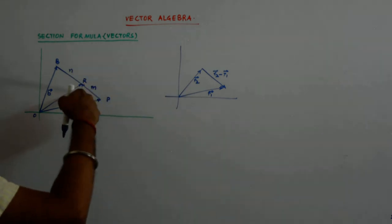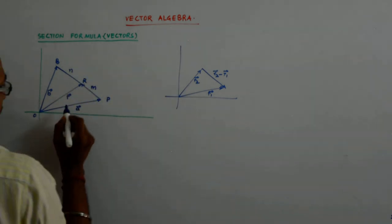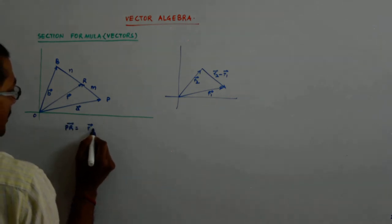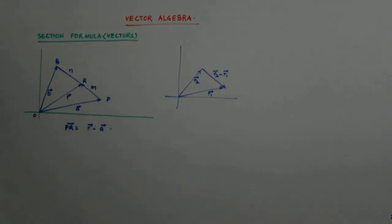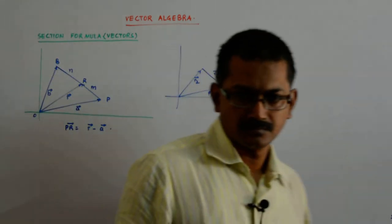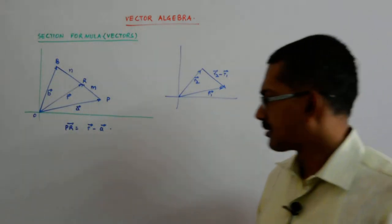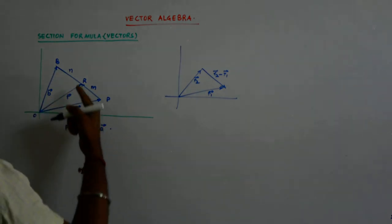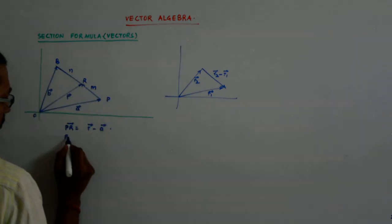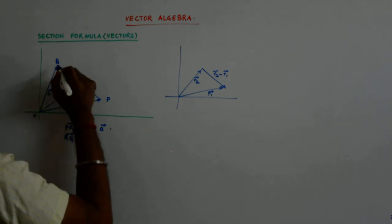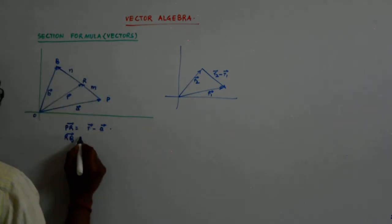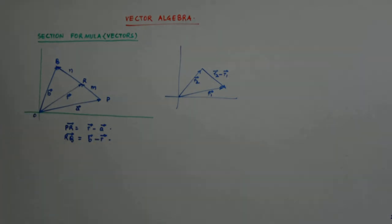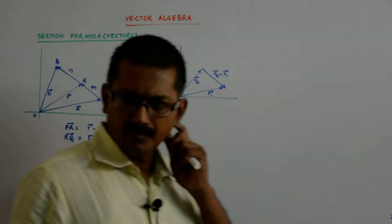So PR is given by r minus a, r minus a, r minus a. What is my RQ? Yeah, it is definitely b minus r, okay.